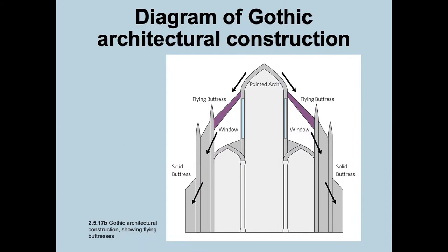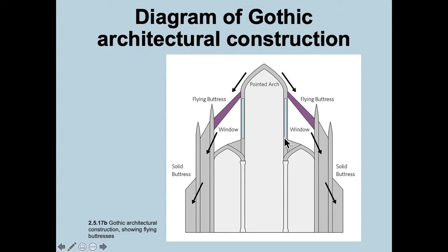Looking at a cutaway, we can now see the pointed arch. That's the big change with Gothic architecture. The other change is the flying buttress — there's all this negative space to allow light in. A solid buttress looks quite different from a flying buttress. We also have more height; the Romanesque was probably down here somewhere, and now with the Gothic we're just that much higher.